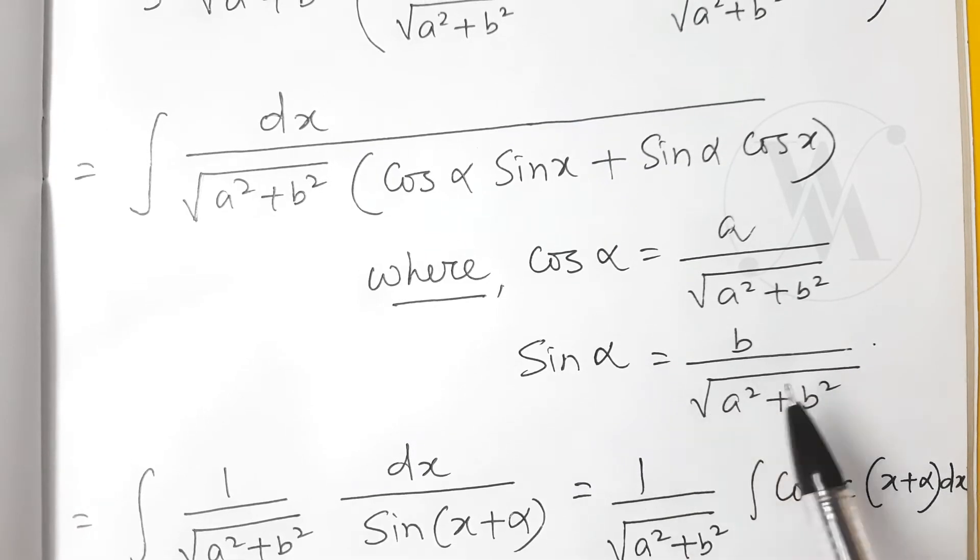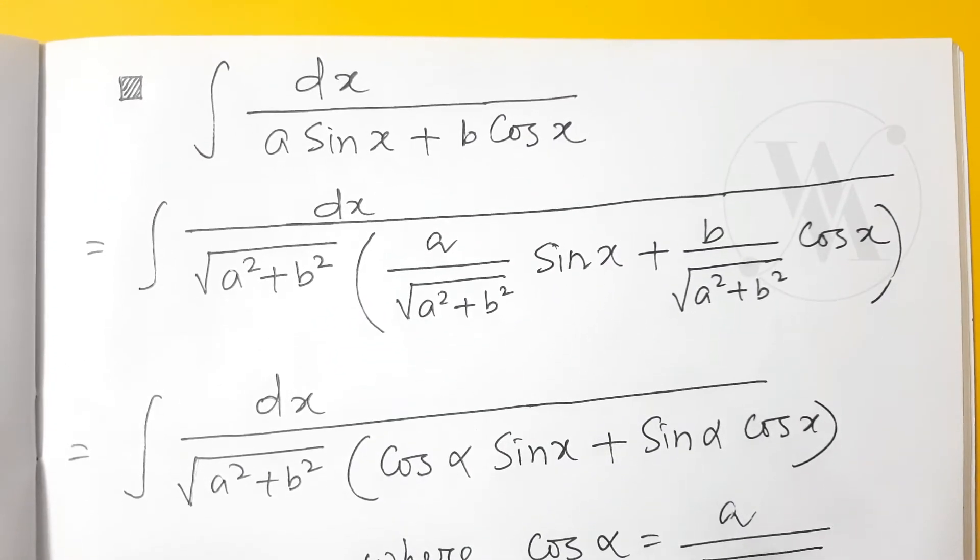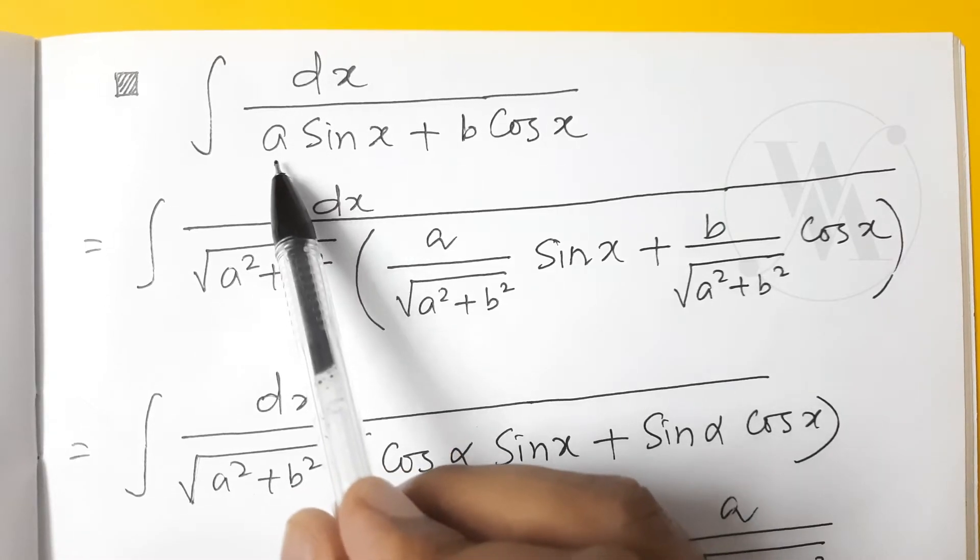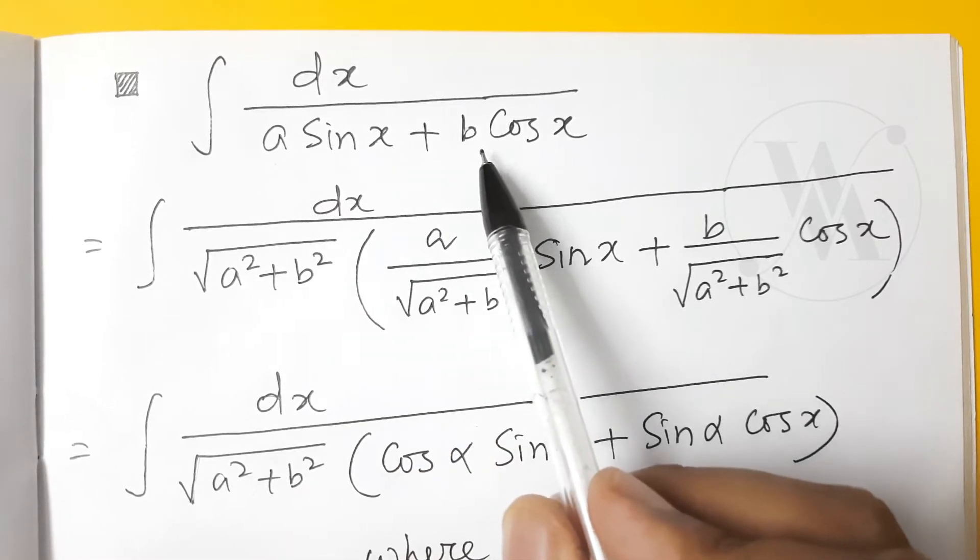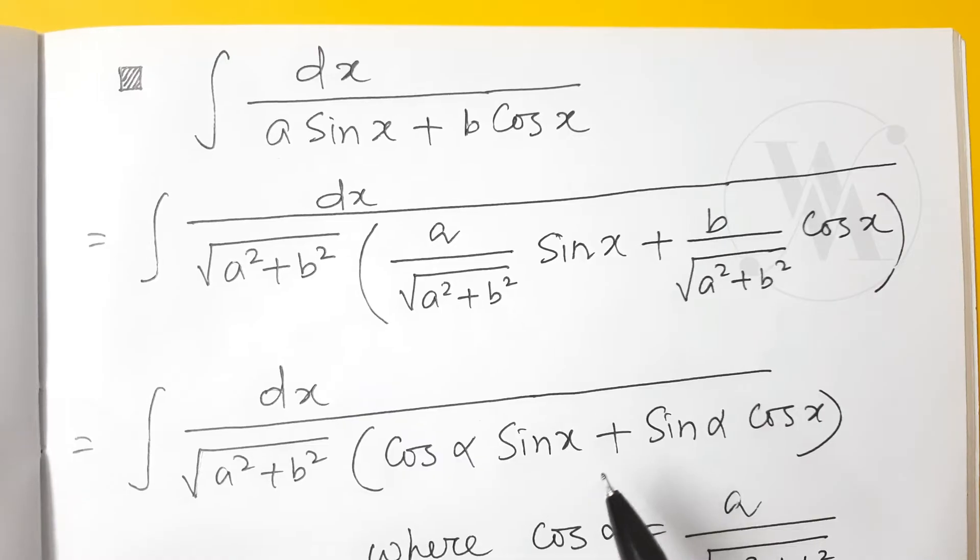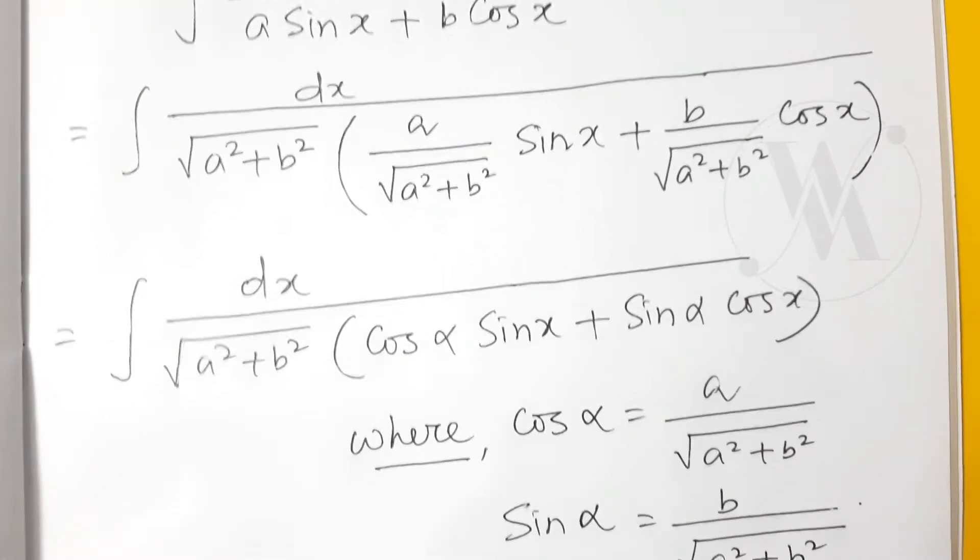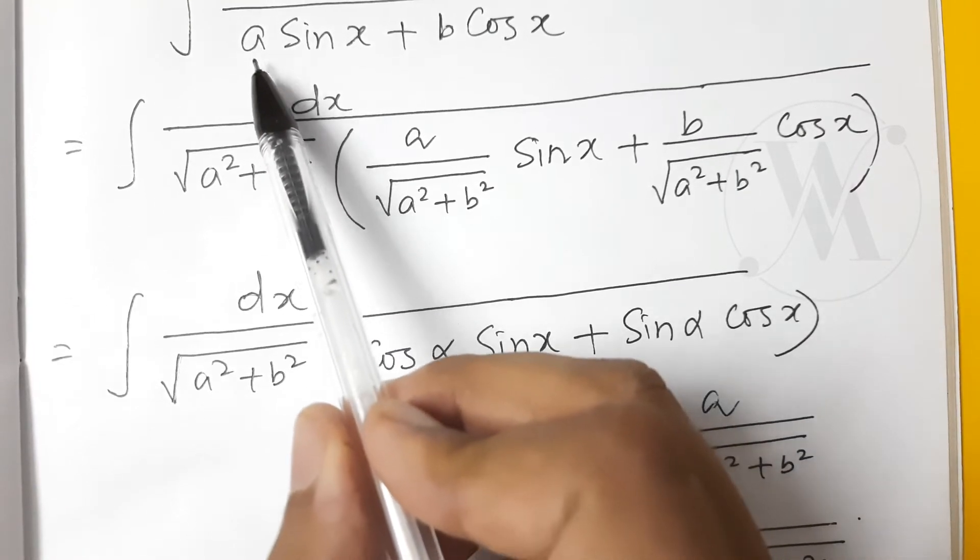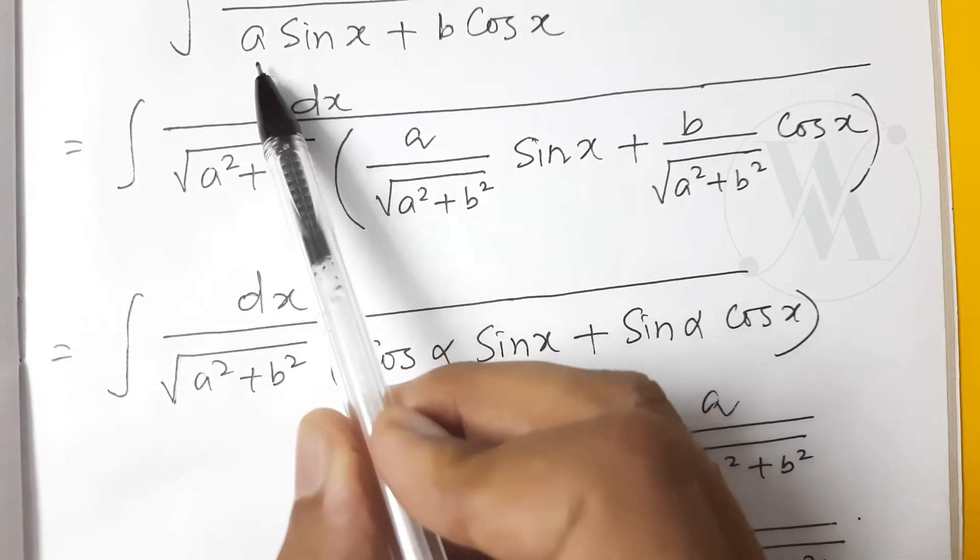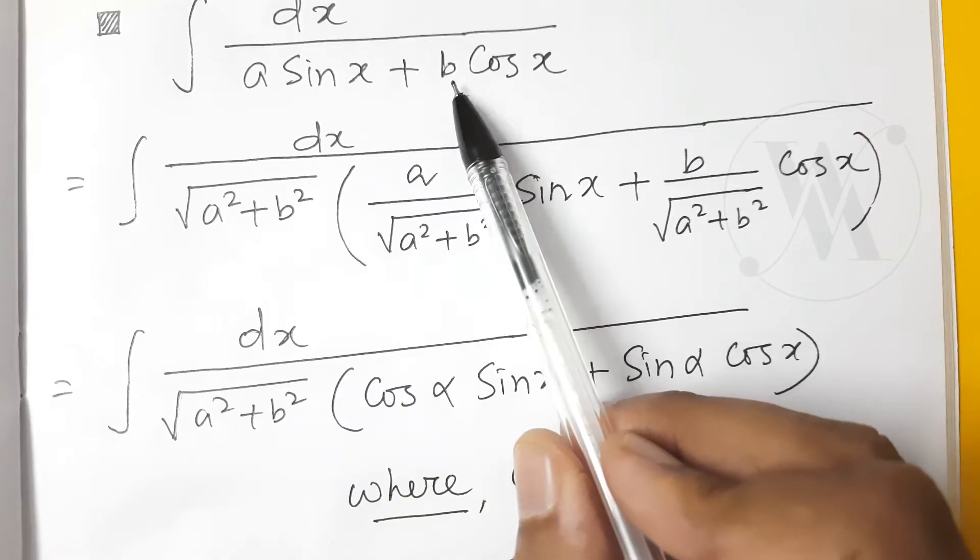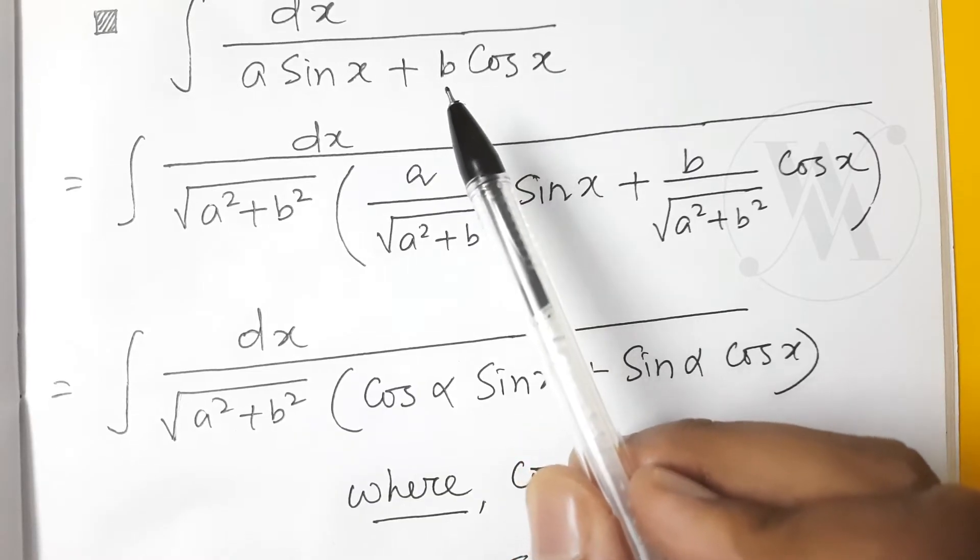You may ask that we could have taken a equal to cos alpha and b equal to sine alpha. But we all know that cos square alpha plus sine square alpha should be 1. So if you would take cos alpha as a and sine alpha as b, then cos square alpha plus sine square alpha will be a square plus b square, which is not equal to 1.